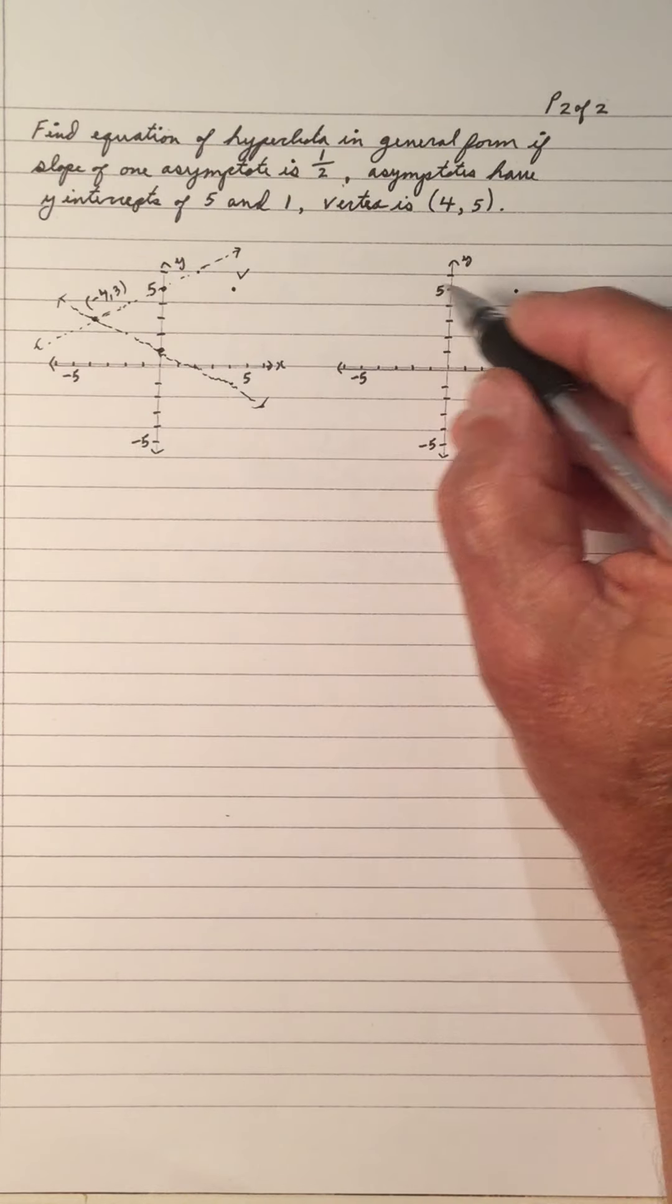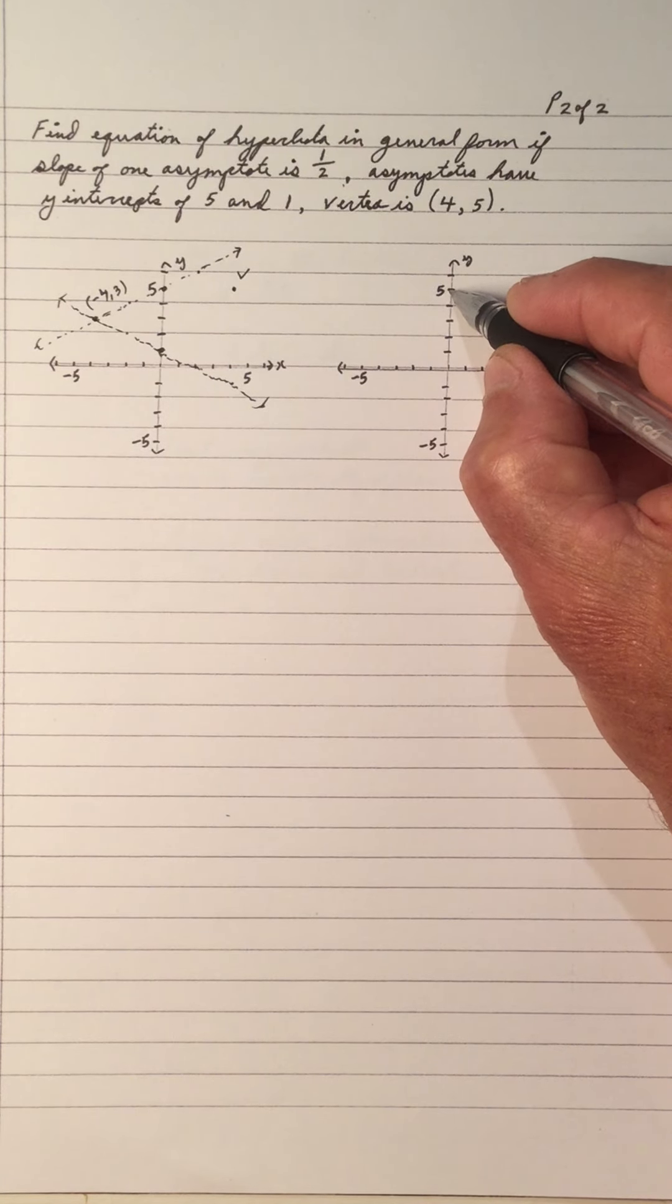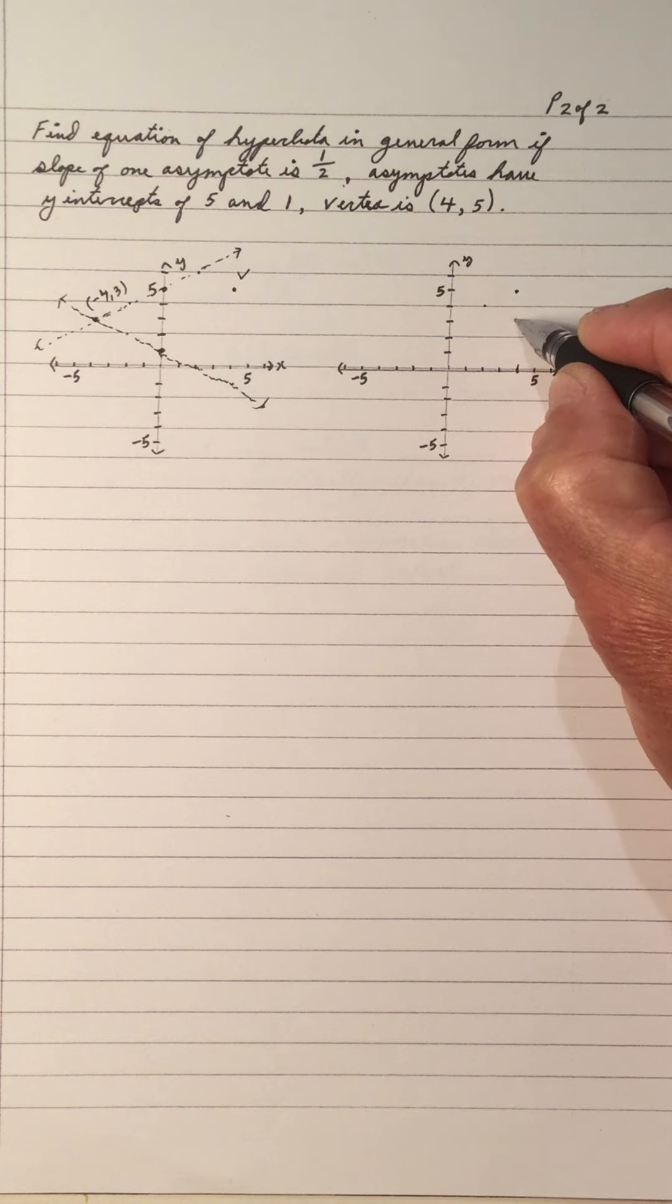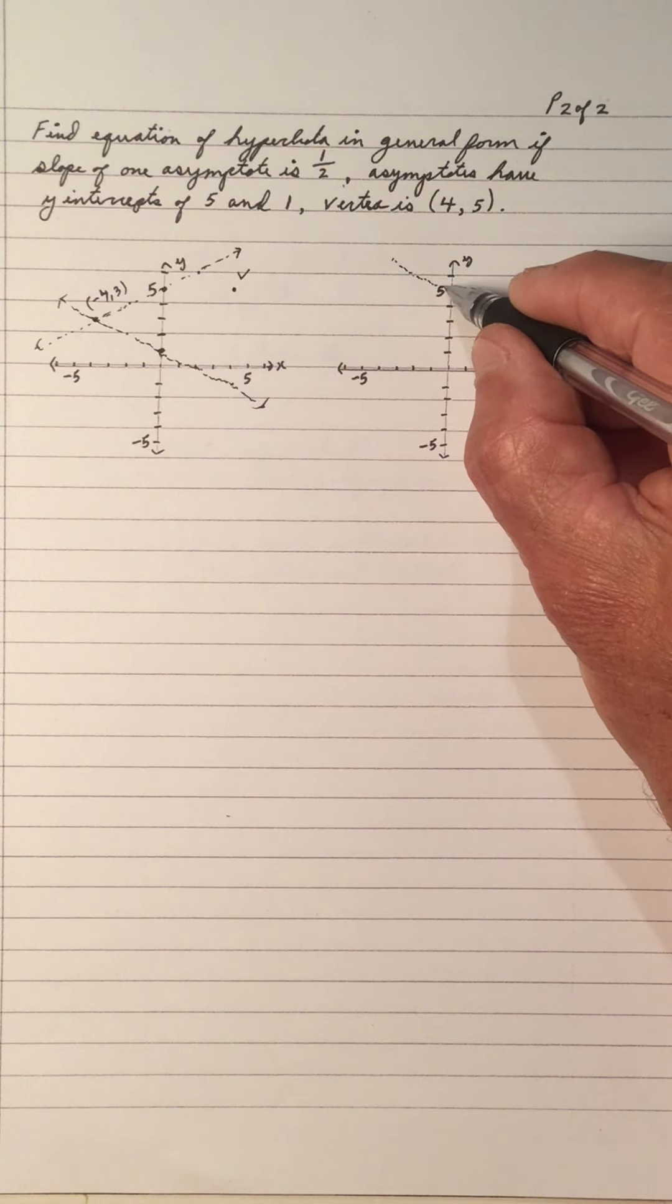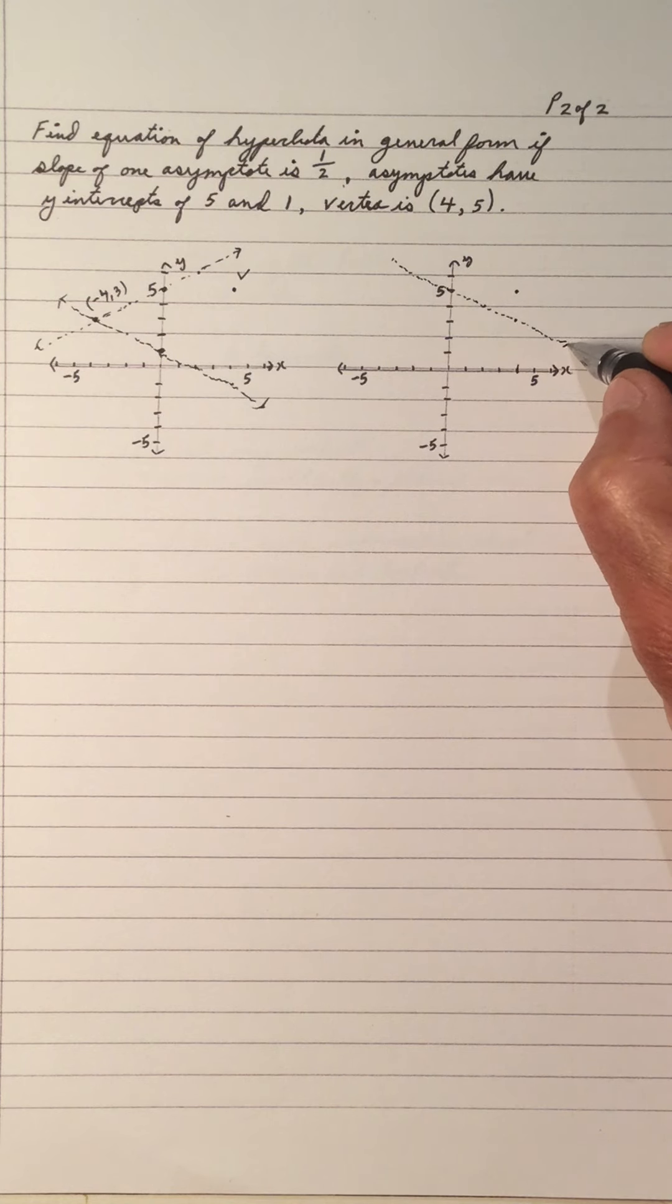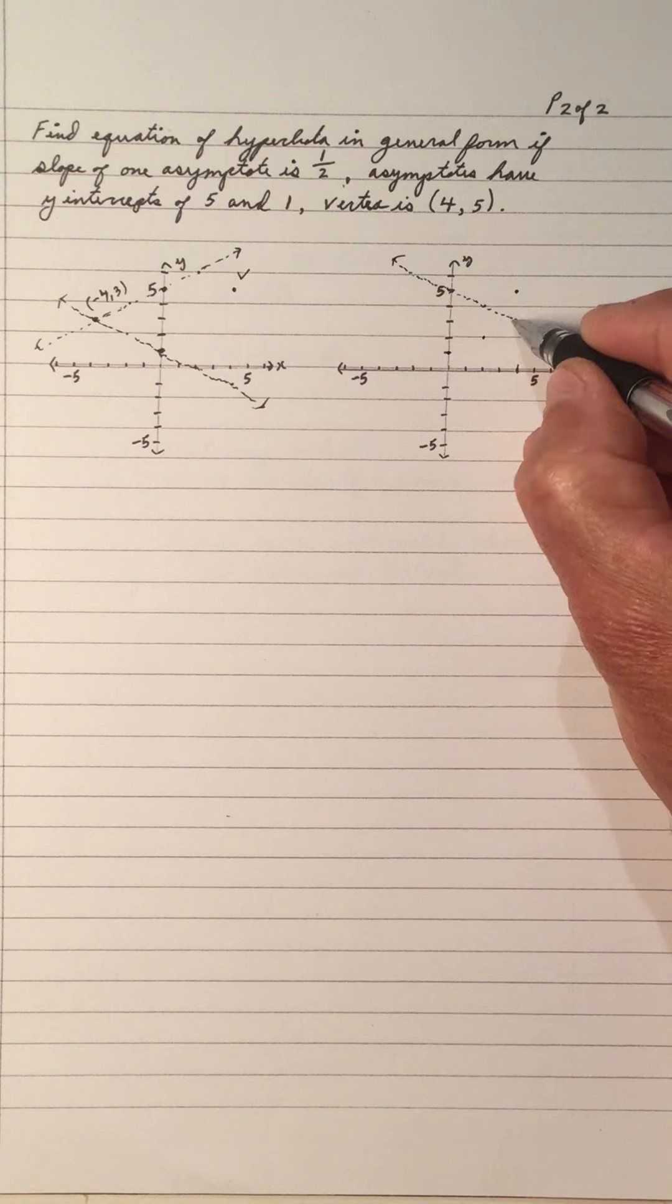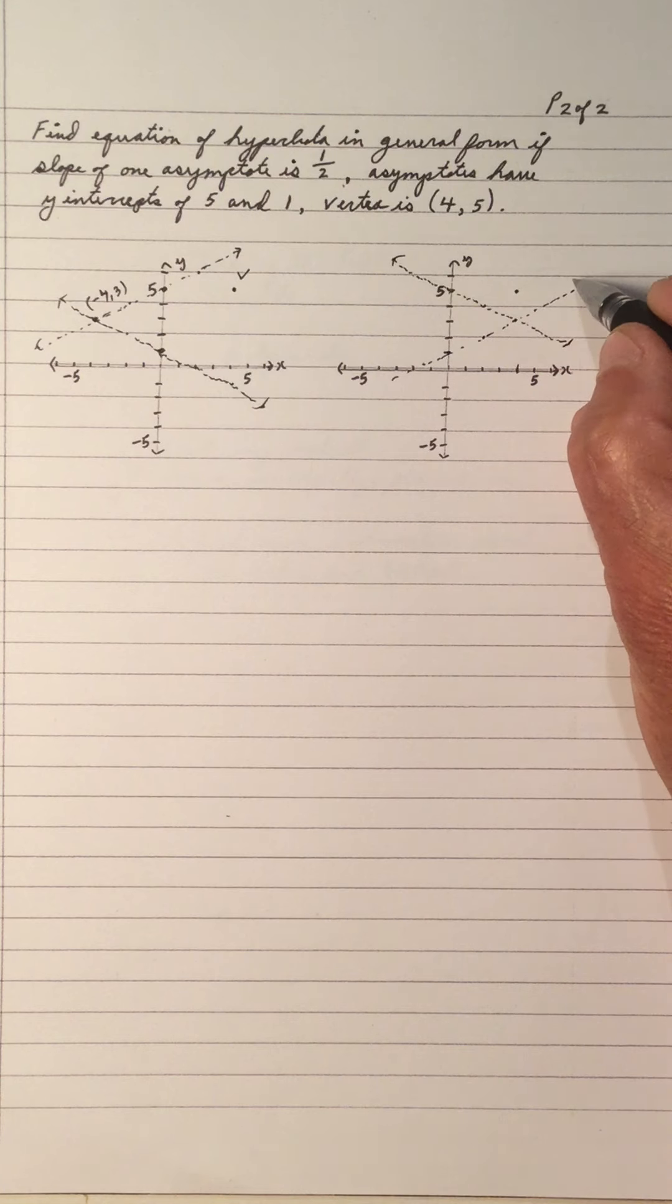So that means it must be a negative 1 half going through the 5. So we go down 1, right 2. Notice now we're lining up. This is the asymptote coming through the 5, but it's negative. And now it's going to the 1 positive. So it's up 1, right 2. So this is the asymptote that's positive.